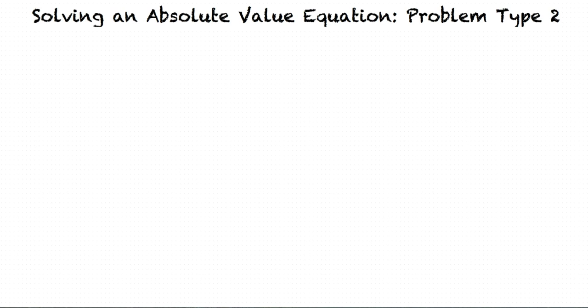This video will cover the topic: Solving an Absolute Value Equation, Problem Type 2. In this video, we will learn to solve an absolute value equation that has a linear expression in the absolute value set equal to a constant. An example problem we will work out is: the absolute value of 4y plus 12 is equal to 4.